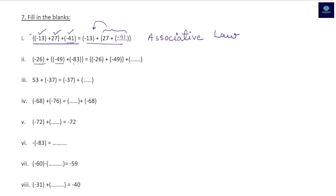In blank two, three integers are added and both sides should be equal by associative law. Checking: -26 is here, -49 is here, but the missing number is -83. Again, this follows the associative law.